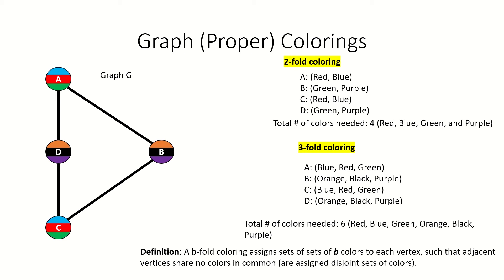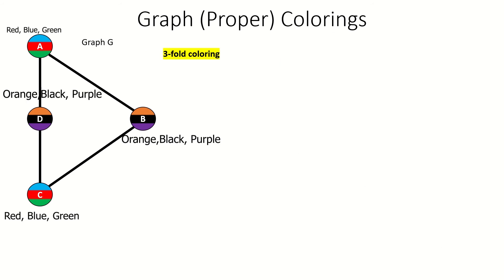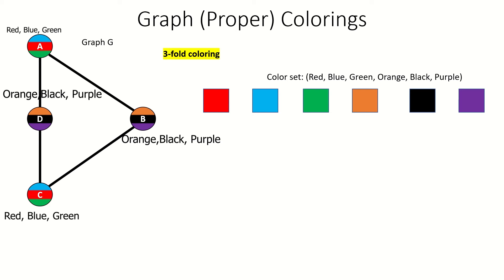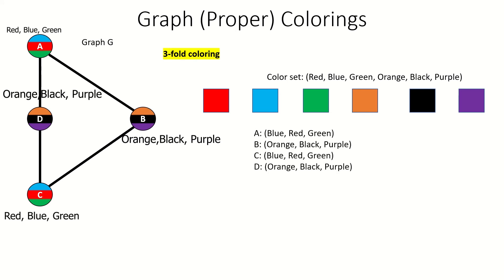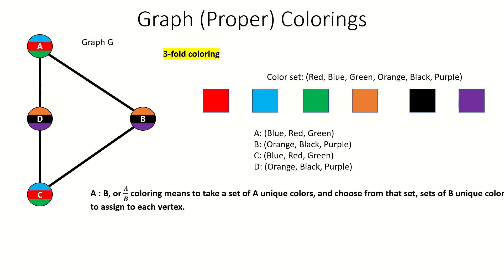Notice what we're really doing in these b-fold colorings. In the three-fold coloring, we took a set of six colors — red, blue, green, orange, black, and purple — and then assigned subsets of size 3 from this larger set of colors to each vertex. Generalizing, if we had a total colors to choose from and we assign a set of b of these colors to each vertex, that's called an a to b, or a over b coloring, expressed as a fraction. If a graph can be properly b-fold colored with a total colors, we say it is a over b colorable.